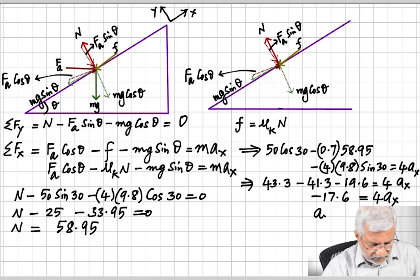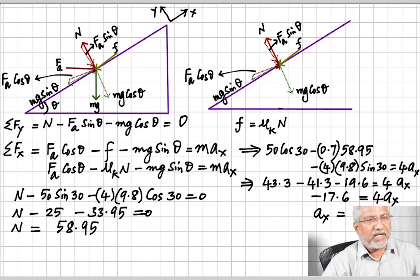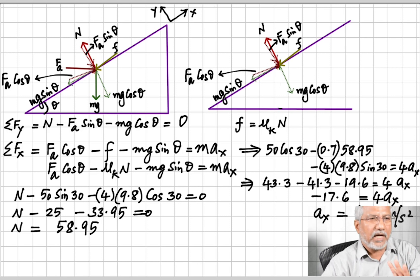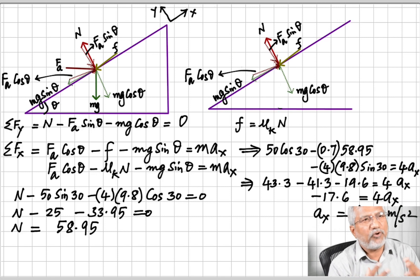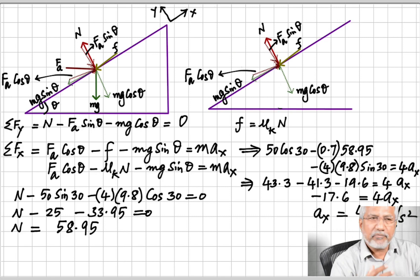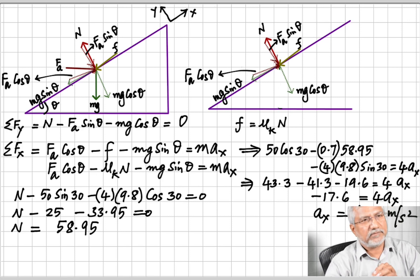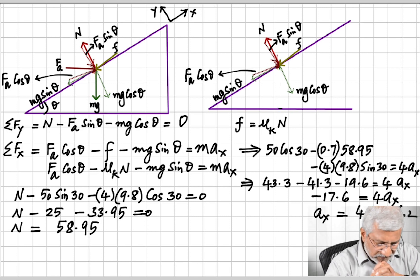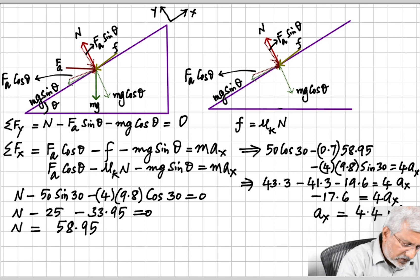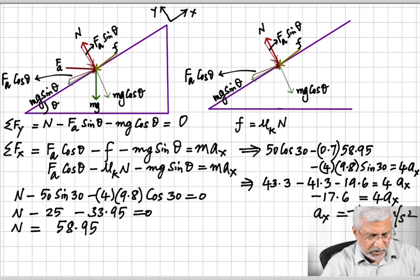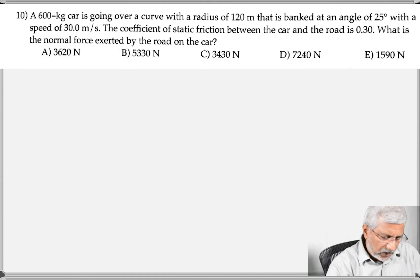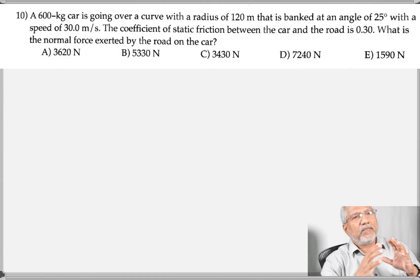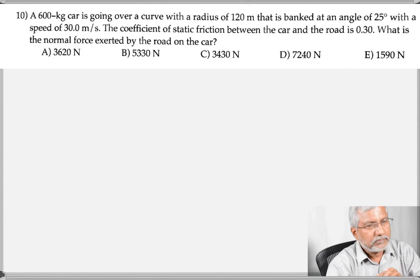Dividing both sides by 4, we get a negative answer: a_x = −4.4 m/s². The negative sign means the block is not actually sliding up — the applied force isn't large enough to keep it moving up, so it's coming back down. That's the first question.